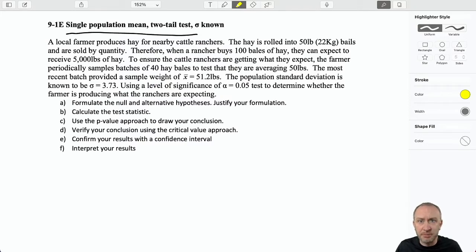We're looking at a farmer who produces hay for nearby cattle ranchers. The hay is rolled into 50 pound, 22 kilo bales and sold by quantity. So if the rancher buys 100 bales of hay, they expect to receive 5,000 pounds of hay. To ensure the ranchers are getting what they expect, the farmer periodically samples 40 hay bales. That sure sounds like a sample size to test whether or not they're averaging 50 pounds. That seems to be the value that we're testing against, that hypothesized value. The most recent batch gave us a sample weight of 51.2 pounds. There's my sample mean. I have a population standard deviation here, 3.73. And we're going to do this test at the 0.05 level of significance to determine whether the farmer is producing what the ranchers are expecting.